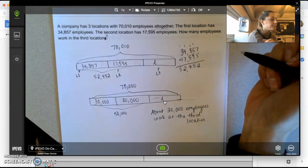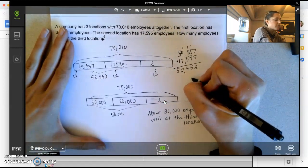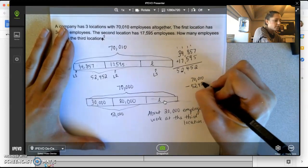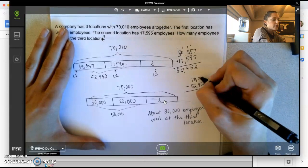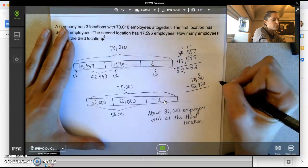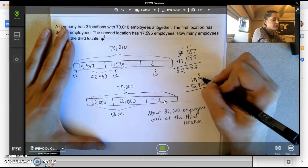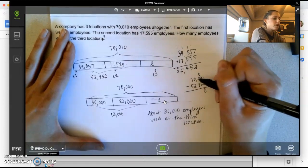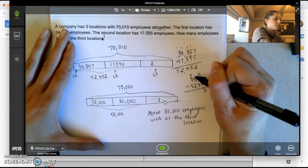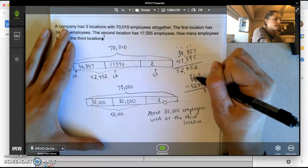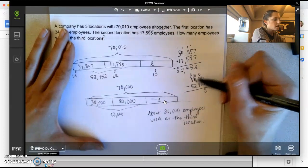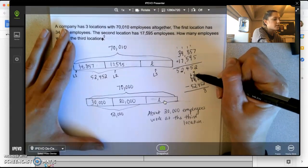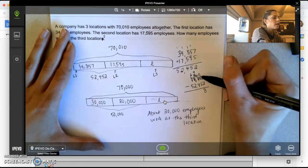Now I need to take my total, 70,010, and subtract 52,452. Zero can't take away two, so I regroup. Ten minus two is eight. Zero can't take away five. I can't borrow from zero. I can't regroup from this. I need to change my seven to a six, and this becomes a ten. I start again. Zero can't take away five, so I move over. I can't borrow from zero. But now I can decompose this ten to a nine, this zero to a ten. Start again. Zero can't take away five. Ten turns to nine. Zero turns to ten.